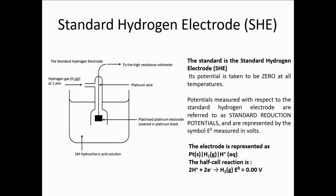The standard hydrogen electrode is composed of a piece of platinum metal immersed in a one molar acid solution, over which hydrogen gas is bubbled at one atmosphere of pressure. The SHE is designated a standard potential of 0.00 volts — meaning it does not contribute to the overall cell potential when made part of a cell. The reduction reaction that occurs is: H⁺ accepts electrons to form hydrogen gas.